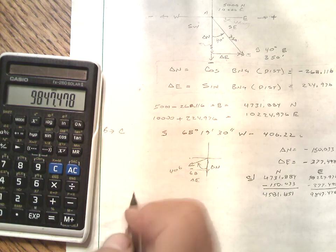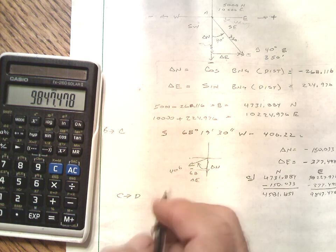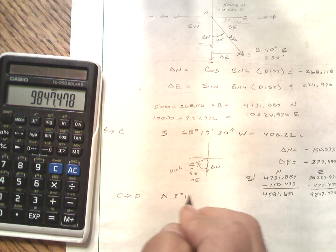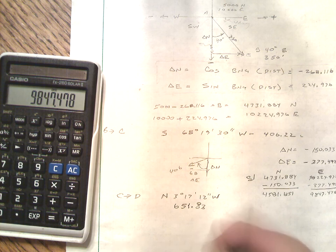All right, I'm going to let you try one more. Let's go C to D. Let's make this north 3 degrees 17 minutes and 12 seconds west. And let's go 651.83. And see if you can come up with the coordinates of D. I'm going to pause the recording and you do the same thing. And then we'll come back and see what the answer is.